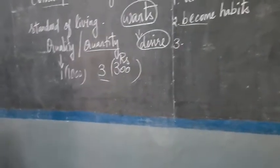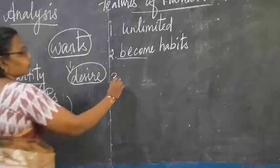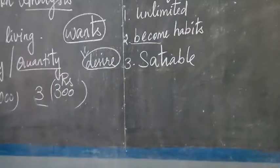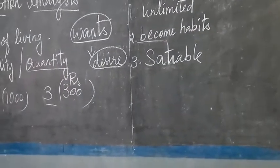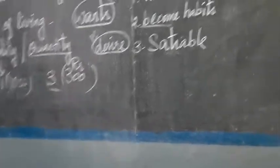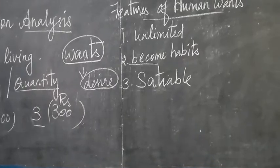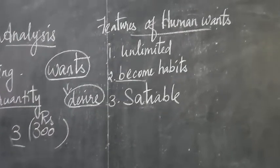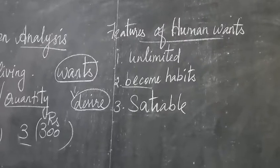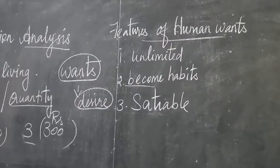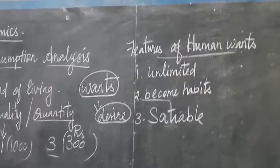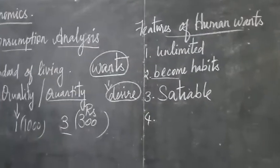The third characteristic is wants are satiable. What do you mean by satiable? Though we cannot satisfy all our wants, some wants can be satisfied. For example, if you feel hungry, immediately if you take food, your want will be satisfied. If you want to take some drinks — cool drinks or other things — if you take them, your want will be satisfied. Sometimes while you are going for a travel and you see an ice cream parlour, if you want an ice cream and you take it, immediately your want will be satisfied. So the wants are sometimes satisfied.